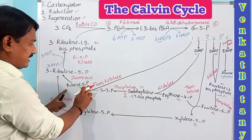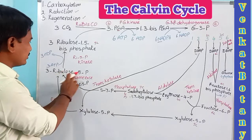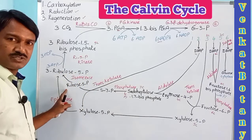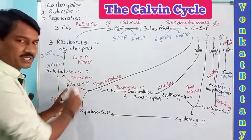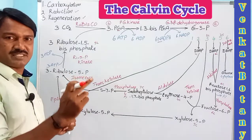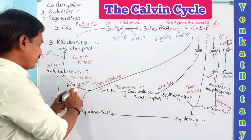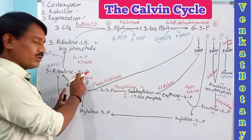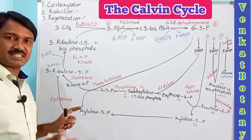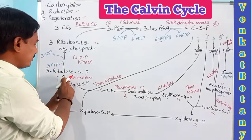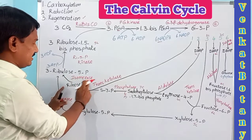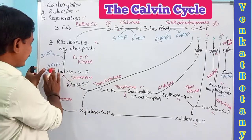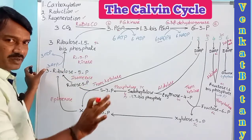Ribose 5-phosphate undergoes isomerization to form ribulose 5-phosphate, as these two are isomers. This reaction is catalyzed by the enzyme ribose 5-phosphate isomerase, producing one ribulose 5-phosphate.